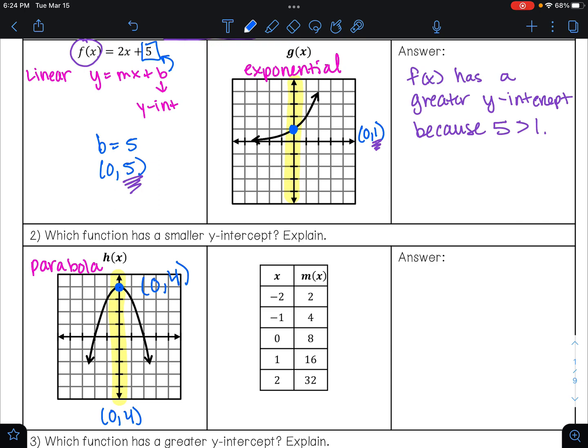For m(x), we are given a table of values. Your y-intercept will always occur where x is 0. So that is happening right here at the point (0, 8). We want to know which function has a smaller y-intercept. So which one is smaller, 4 or 8? 4. So h(x) has a smaller y-intercept because 4 is less than 8.